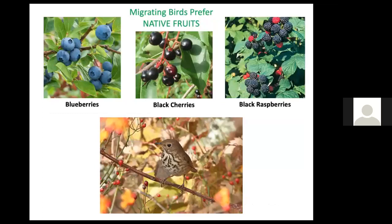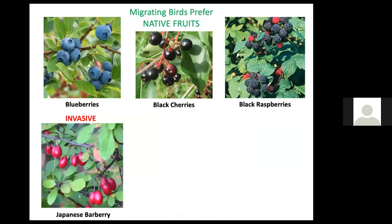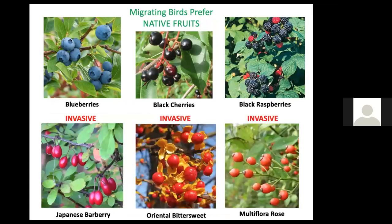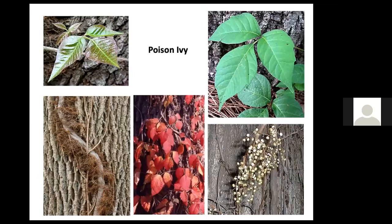Migrating birds actually prefer native fruits. A study showed that even when blueberries, black cherries, and black raspberries were fairly scarce, while Japanese barberry, oriental bittersweet, and multiflora rose were common, native birds still sought their favorite native fruits in preference to the invasives, which just don't taste as good — and are probably not as nutritious. They will eat invasive fruits if they can find nothing else. Poison ivy is a native vine whose white fruits are actually a winter food source for birds, though it's understandable to eliminate it in areas where humans might contact it.